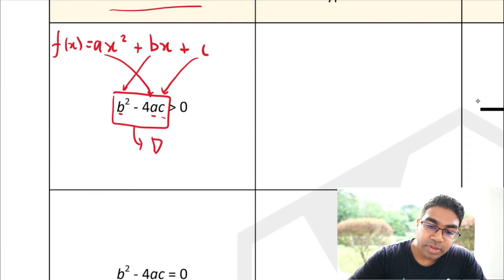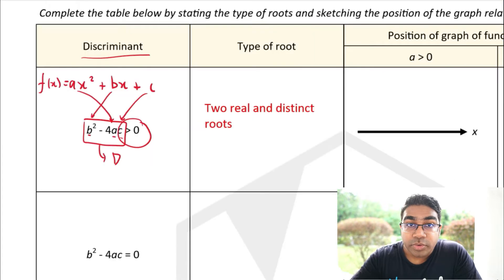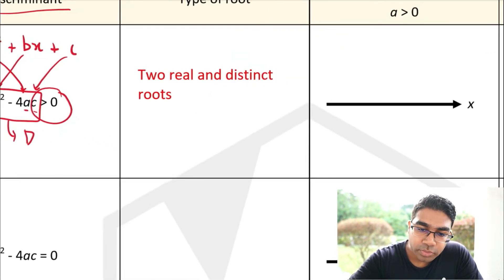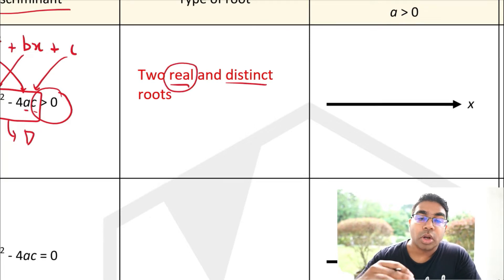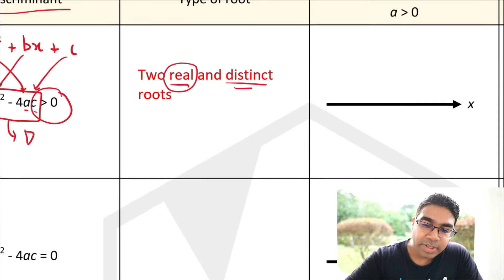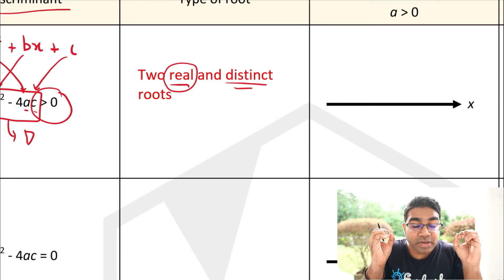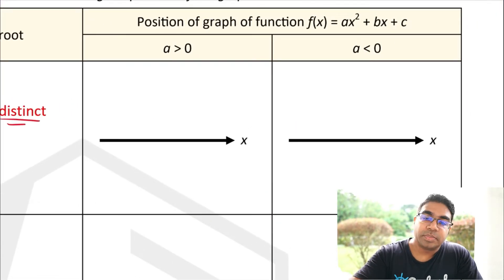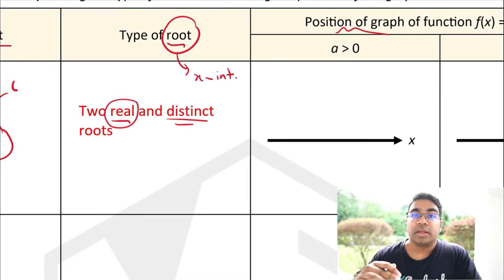When the value of the discriminant is greater than 0 — a positive value — that means the quadratic function has two real and distinct roots. Real here meaning not imaginary; it is a real number. And distinct means the two roots are basically different. We must also understand that roots are actually the x-intercepts.